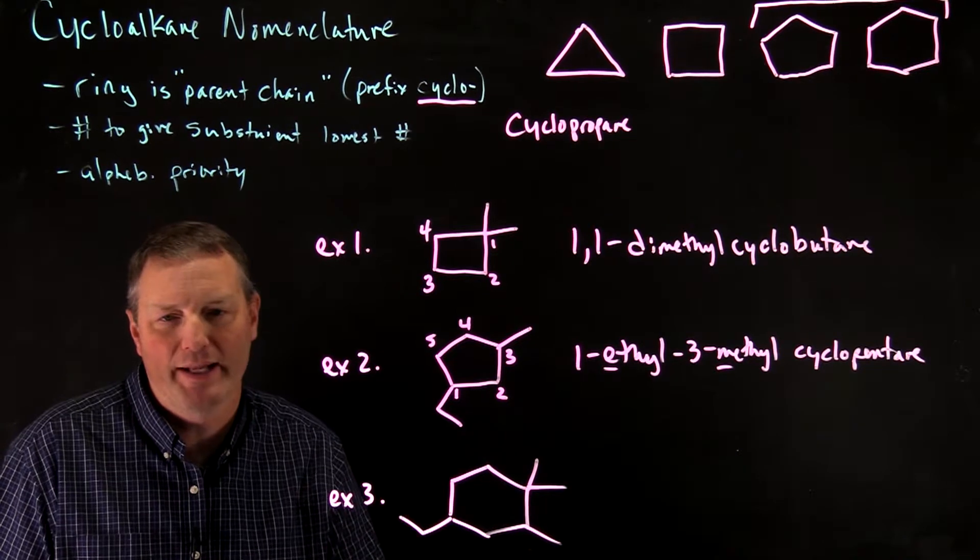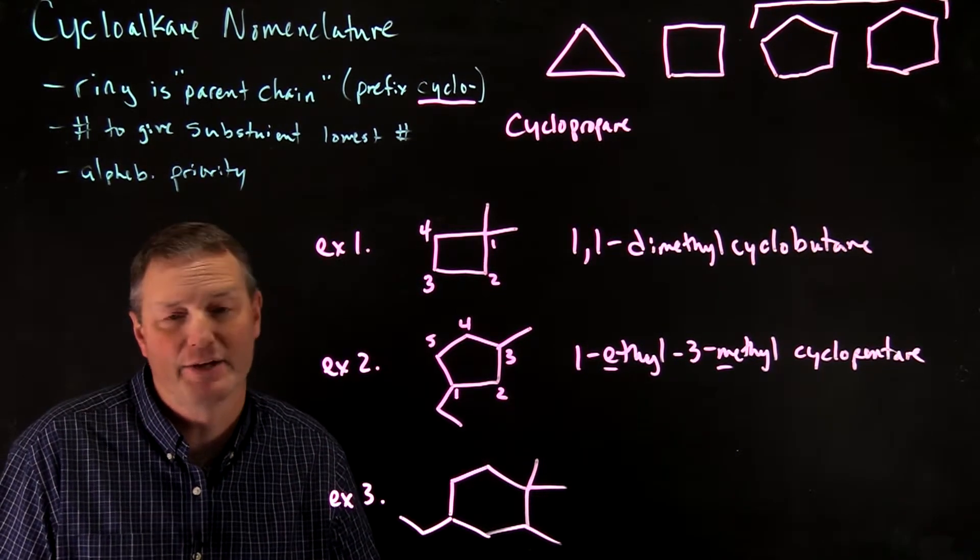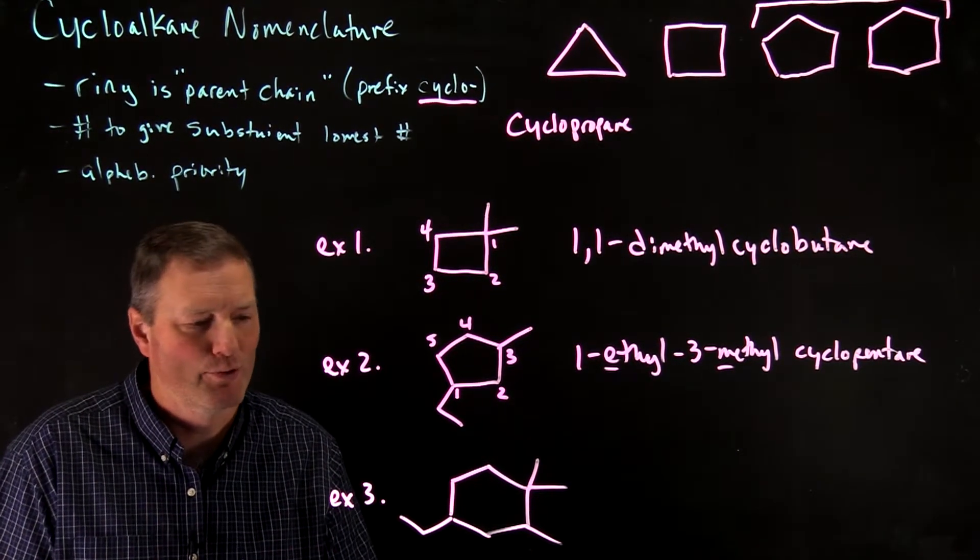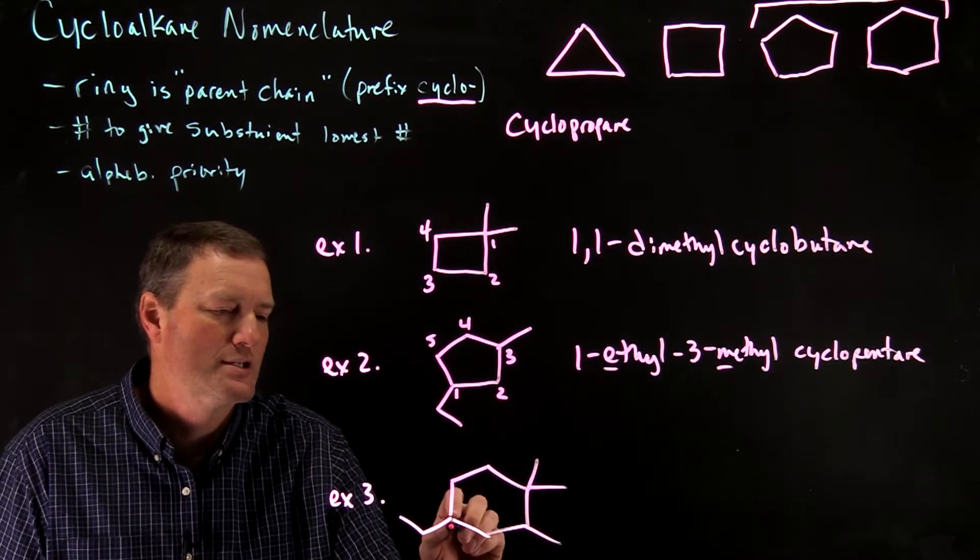Again, the ethyl is going to take priority in naming and numbering because of alphabetization. It doesn't have to do with the size of the group or things like that. So this is going to be carbon 1.